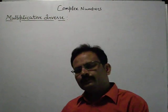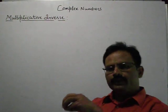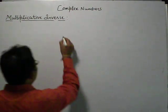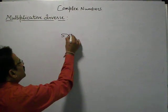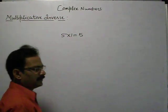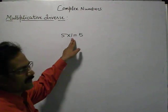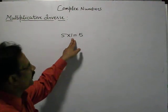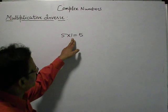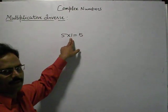What is multiplicative inverse? First, we see the multiplicative identity is 1. Why is it 1? Because if you multiply any number with 1, we will always get the same number. Any number will not lose its identity if we multiply with 1. So, the multiplicative identity is 1.